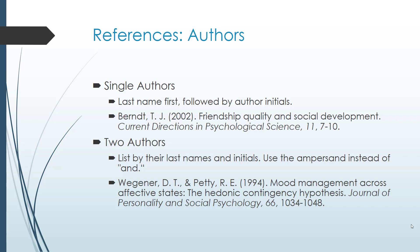Some basic rules that apply to all APA citations, starting with authors. For single authors — if it's one person that wrote the book or article — it's pretty simple: last name, comma, first initials. You're always listing the last name first. APA always uses first and possibly middle initials if they have their middle initial on the printed publication. So, for example: Burnt, T.J. Make sure you are putting that comma in between there — that signifies that Burnt is the last name.